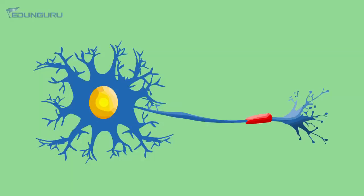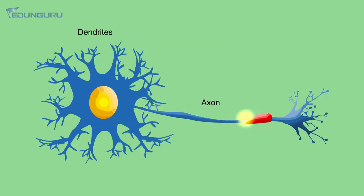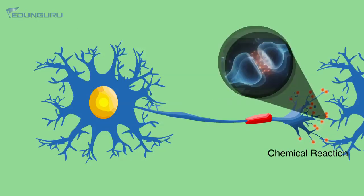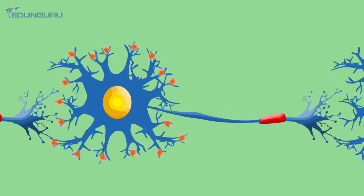Now, we are going to study how this information passes. The information is received by the dendrites — the dendritic tips receive the information — and immediately a chemical reaction is set off. The message travels in the form of electrical impulses. As soon as the chemical reaction sets off, that creates an electrical impulse. This electrical impulse travels to the cell body, then to the axon — the longest part of the nerve cell — and ultimately creates a chemical reaction at the end. There is a gap between two neurons known as synapse. The axon releases certain chemicals into the synapse, which are received by the next neuron in line, and again a chemical reaction is set off that creates an electrical impulse.